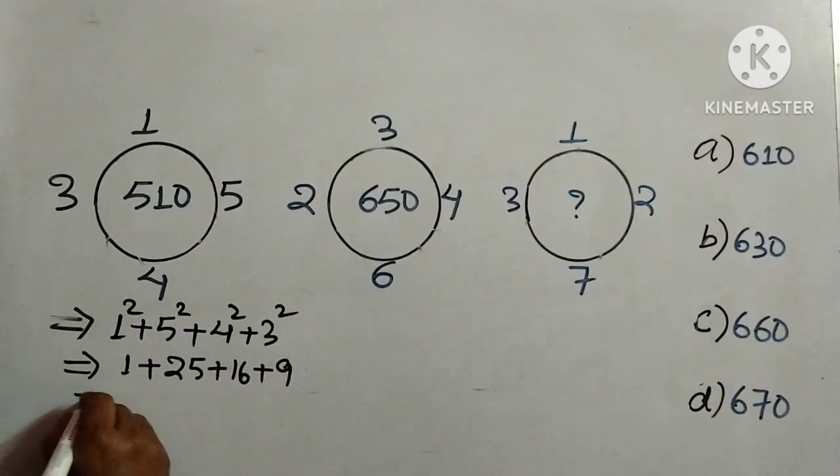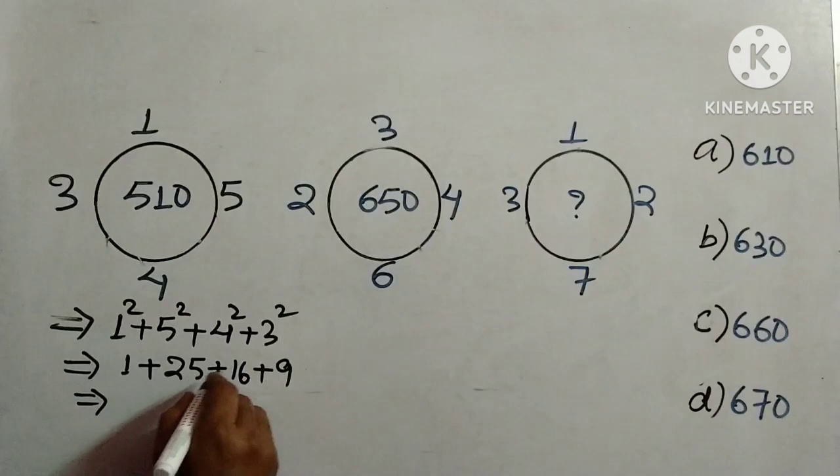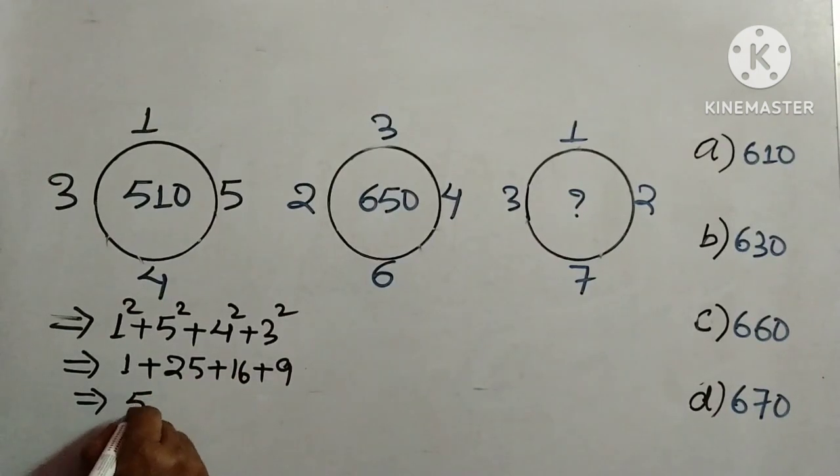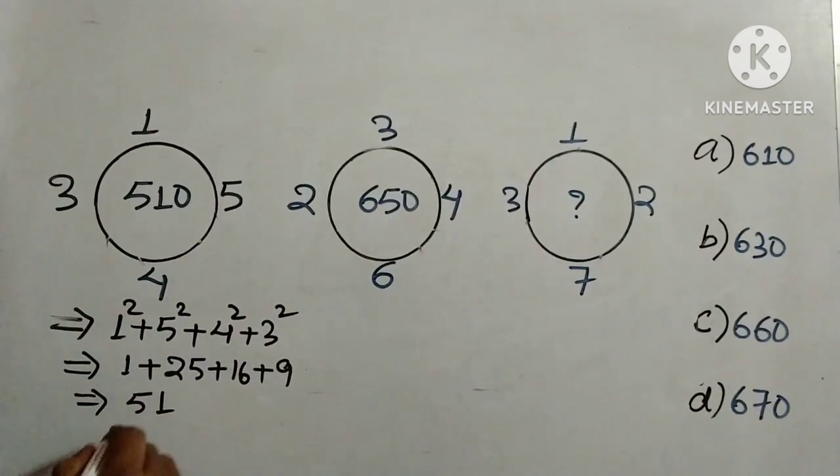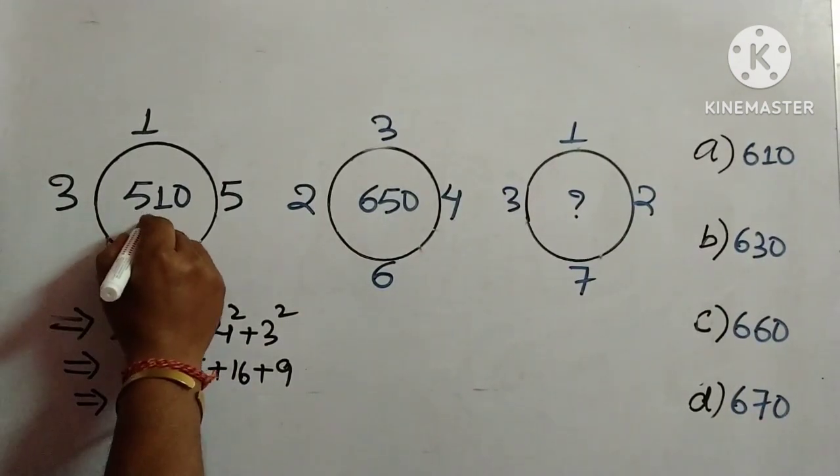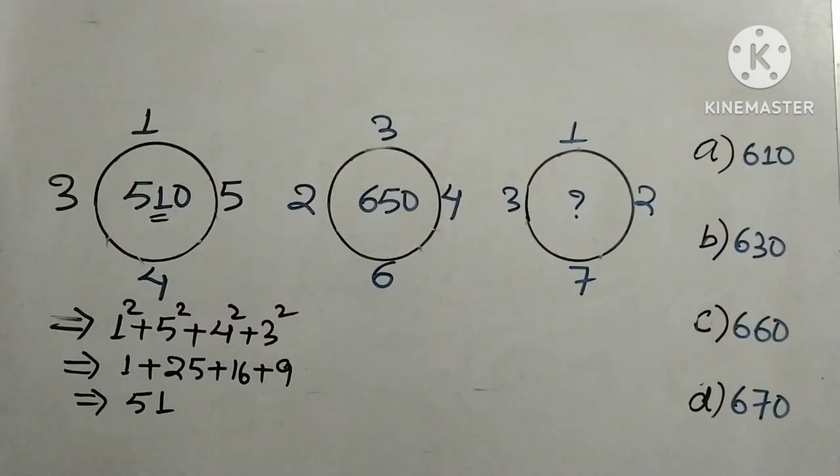This comes to 51. Now see, we have got 51, but here it is 510. So how can we get 510? We will multiply this answer by 10, so we are getting 510.